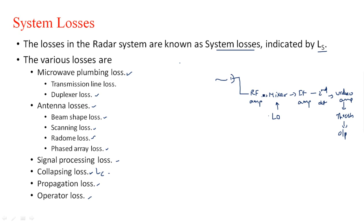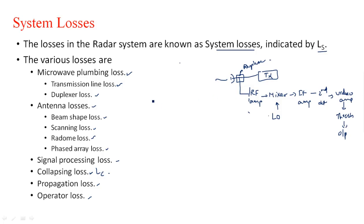When the signal is traveling from one waveguide to another waveguide, if coupling is not done properly, there will definitely be a loss of signal — that is plumbing loss. This may occur in the transmission line or at the duplexer. The duplexer is connected between the transmitter and receiver to separate the transmitting and receiving signals, and is placed just in front of the antenna. These are the different plumbing losses generally encountered in radar systems.